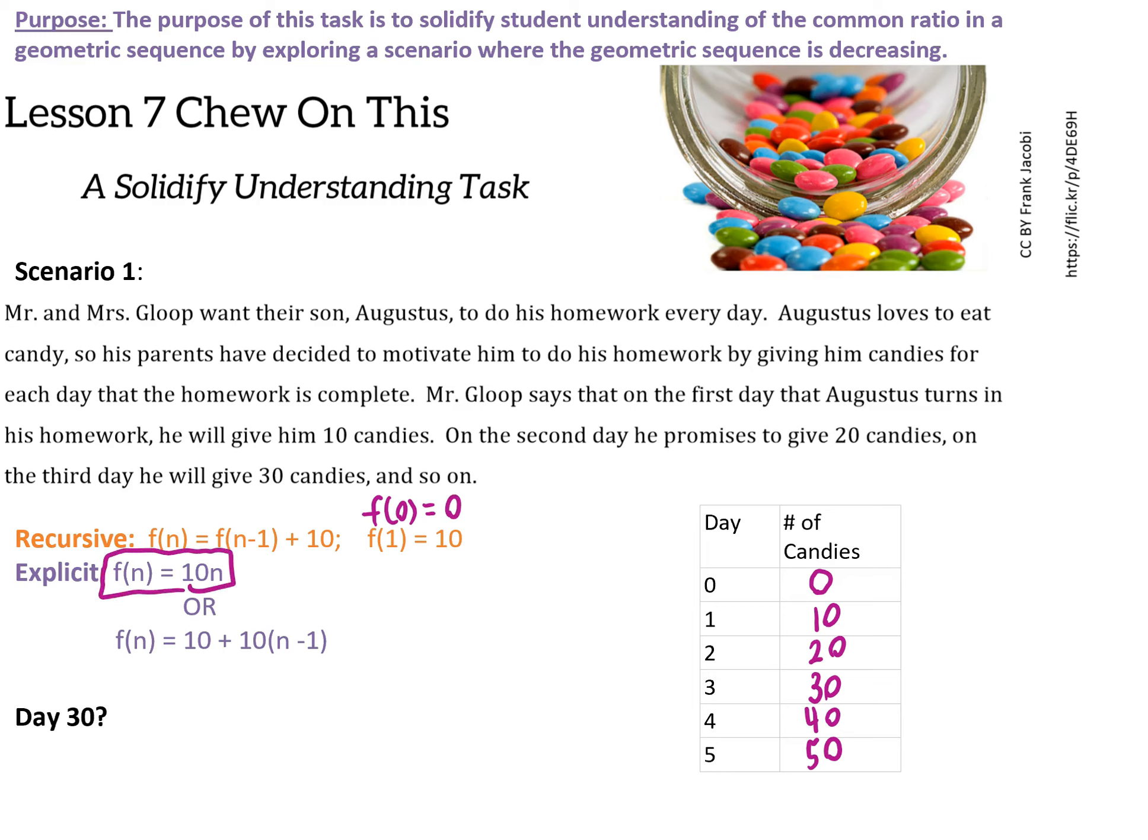Or we could also use the fact that f(0) is zero because obviously he's going to get zero candies on day zero, and that gives us this more simple rule f(n) = 10n. These rules are equivalent because if you distribute here you get 10 + 10n - 10, and ten minus ten cancels out. So ten n is the simplest rule, and that allows us to answer the question: on day 30 how many candies will you get? So that's going to be f(30), so ten times thirty, that's going to be 300 candies on day 30.